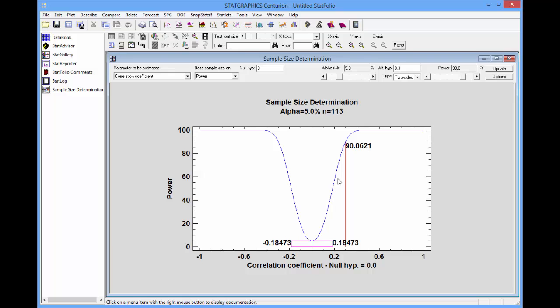The curve displayed is the power curve, and it shows that if the correlation coefficient is 0.3, that I have a slightly better than 90% chance of rejecting the null hypothesis. Slightly better because it needed to find an integer value for N. You also see displayed below a 95% confidence interval for the correlation coefficient if the estimate happened to turn out to be 0.